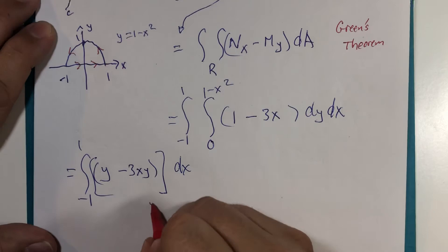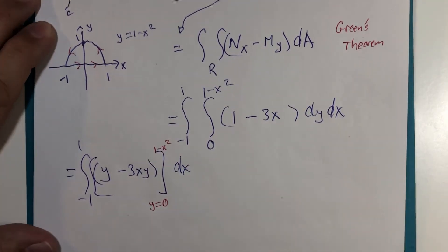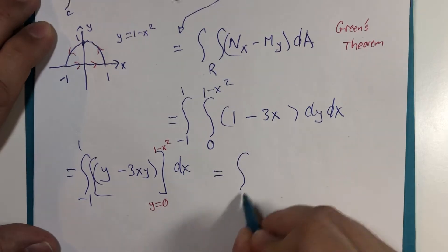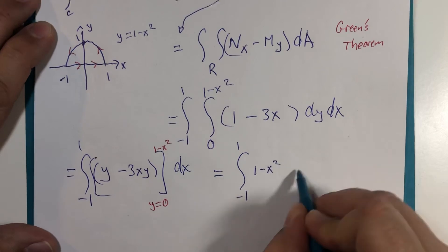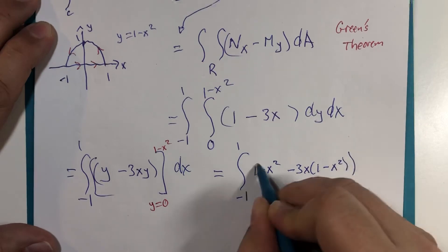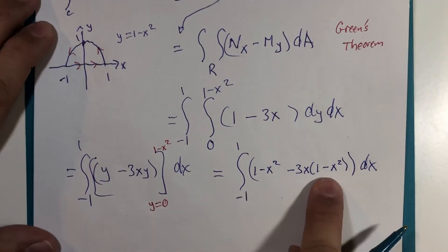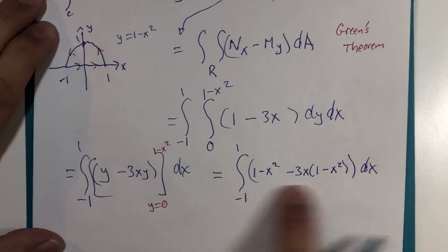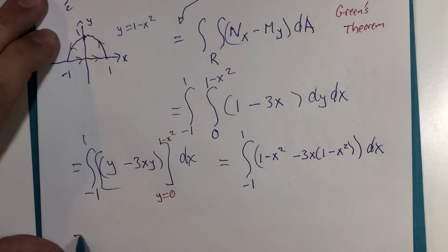And y goes from 0 to 1 minus x squared. That will leave us 1 minus x squared minus 3x times 1 minus x squared. That's y and that's y. And if y is 0, the whole thing is 0.